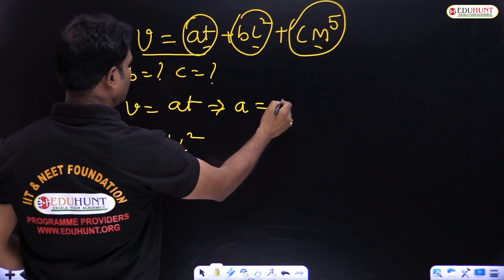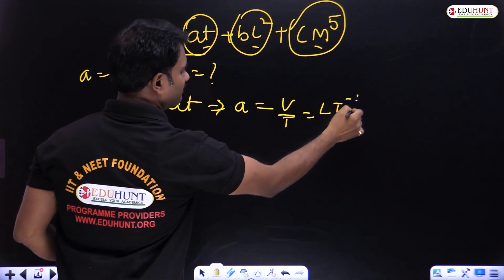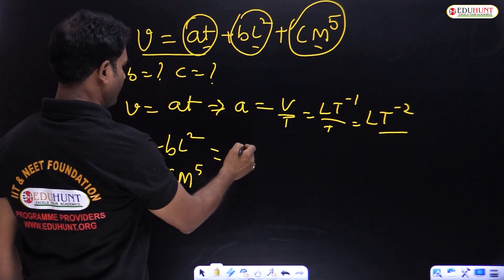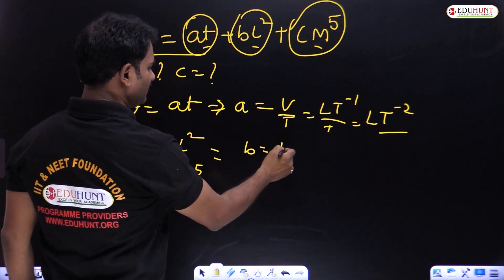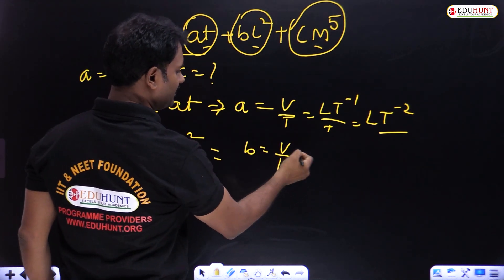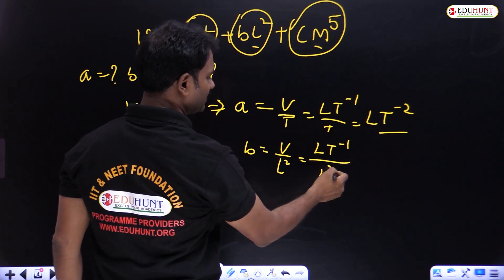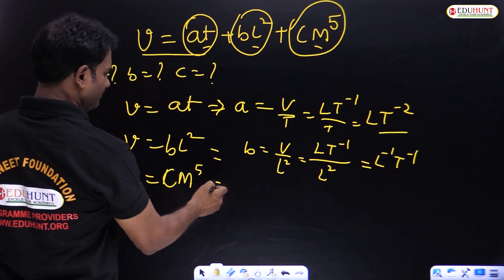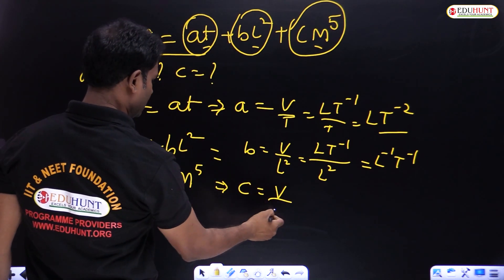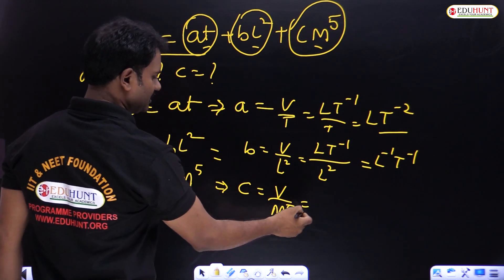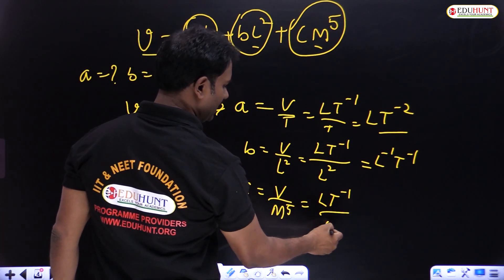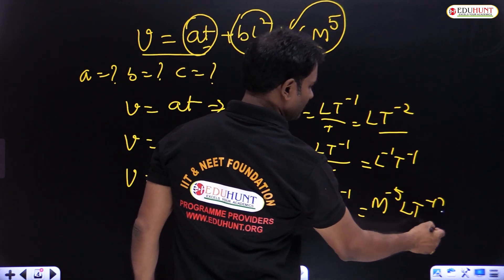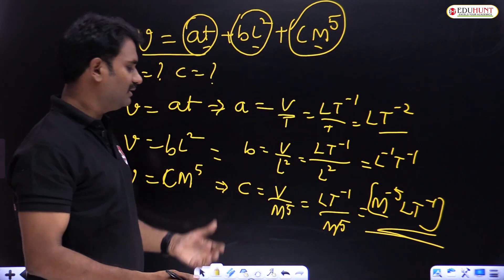From this, a equals v divided by t, where v is l·t⁻¹, so a equals l·t⁻². For b: b equals v divided by l², where v is l·t⁻¹ divided by l², so b equals l⁻¹·t⁻¹. For c: c equals v divided by m⁵, which is l·t⁻¹ divided by m⁵, so c equals m⁻⁵·l·t⁻¹. This is how you find unknown physical quantities using dimensional analysis.